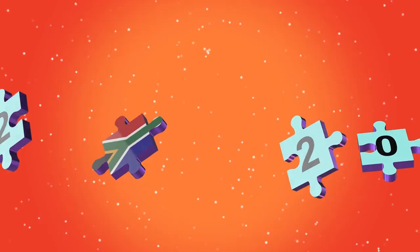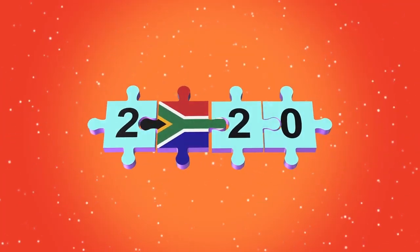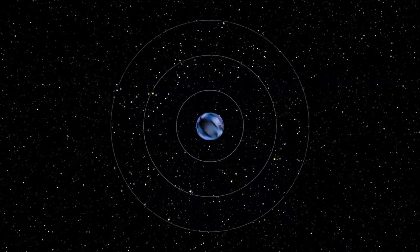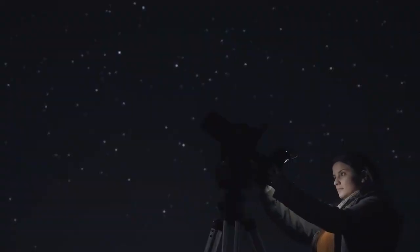What does this mean for us? Tiny specks on a pale blue dot. It means we're part of something far grander, far stranger than we ever imagined. The universe isn't a backdrop, it's a dynamic, evolving puzzle that doesn't care about our assumptions.